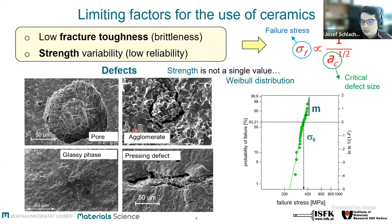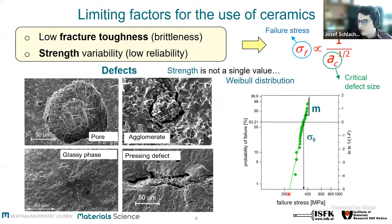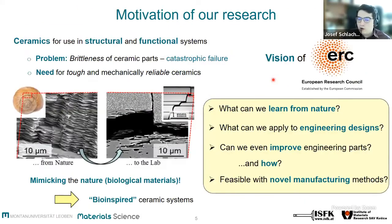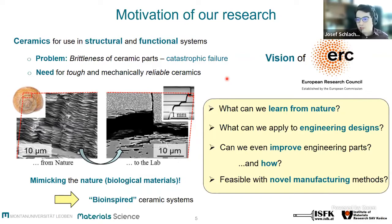We know that defects can affect the strength characterization. Due to the fact that these defects differ in their size, shape, and location, the ceramics cannot be described with only one single value. Therefore, we need to do a statistical analysis like Weibull statistics. What we can see here is a strength distribution of several samples, and the failure stress is indirectly proportional to the critical defect size, which means a high critical defect size reflects a low strength value.